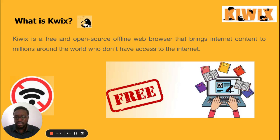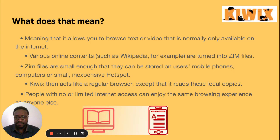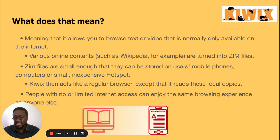KIWIX is a free and open source offline web browser. It allows you to browse text or video that is normally only available on the internet. Various online content such as Wikipedia, for example, are turned into ZIM files. So content that has to be on the internet can be converted to a file called .ZIM files, and then these files can be accessed on KIWIX. Wikipedia, for example, can be converted into ZIM files and then be accessed on KIWIX offline for people to use.